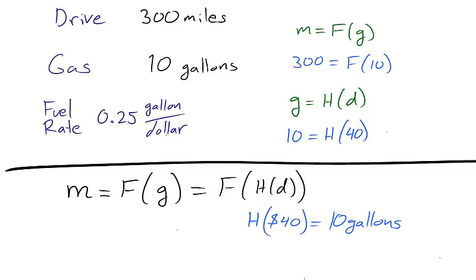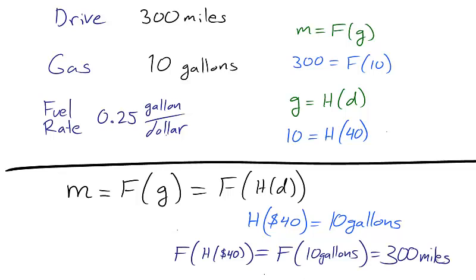That is to say, d is equal to 40. I spent $40 to obtain 10 gallons of gas. And with those 10 gallons, I drove 300 miles.